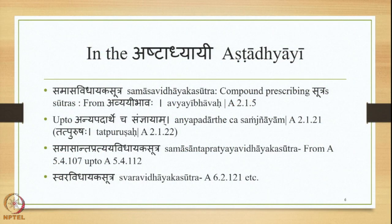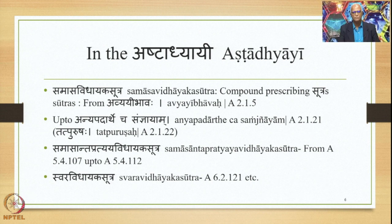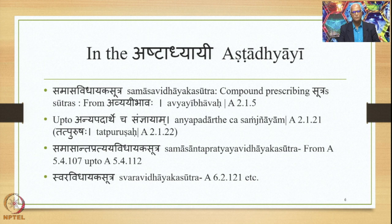In the Ashtadhyayi, the Avyayibhava Samasa is stated in different places. The Samasa Vidhayaka Sutras related to the Avyayibhava Samasa are stated at 2.1, precisely from 2.1.5 onwards up to 2.1.21 inclusive. This small section of Sutras states the Avyayibhava Samasa and tells us the semantic conditions under which it can take place. Incidentally, 2.1.22 is the Tatpurusha Samasa Vidhayaka Sutra, which we have already studied in the first course on Samasa in this series.